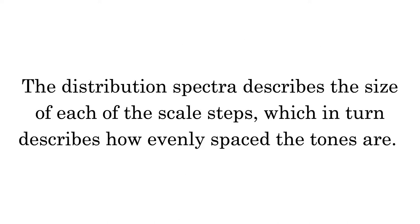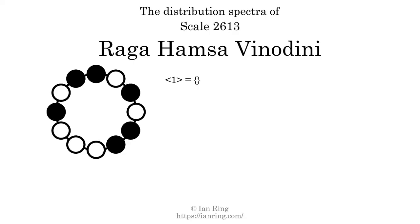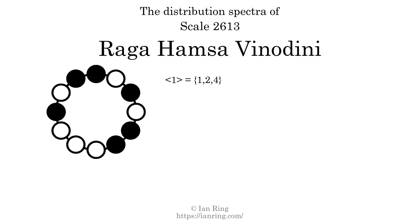The distribution spectra describes the size of each of the scale steps, which in turn describes how evenly spaced the tones are. A generic interval is how many scale steps are between one tone and another. A specific interval is how many semitones apart they are. The generic interval of one scale step comes in three different specific interval sizes: 1 semitone, 2 semitones, and 4 semitones. The spectrum width of this generic interval is the highest, 4, minus the lowest, 1, which equals 3.